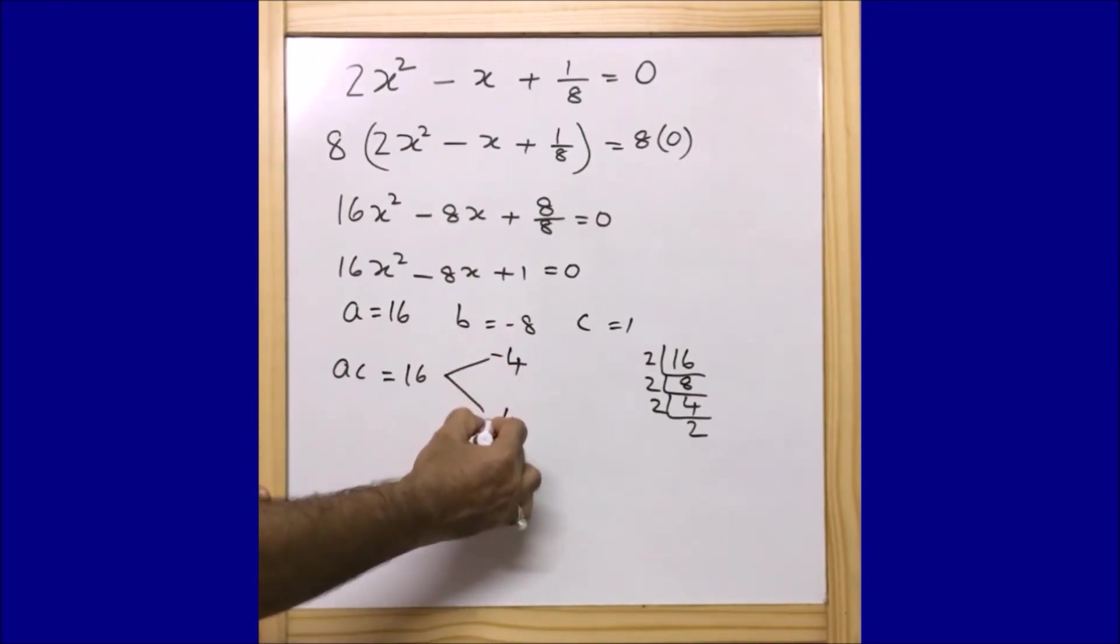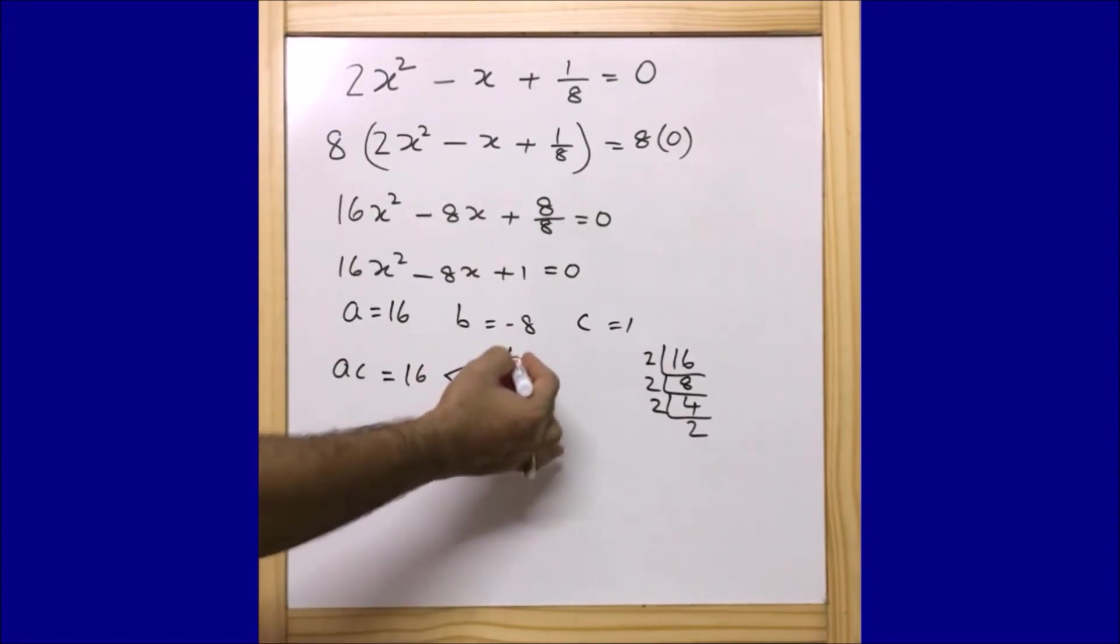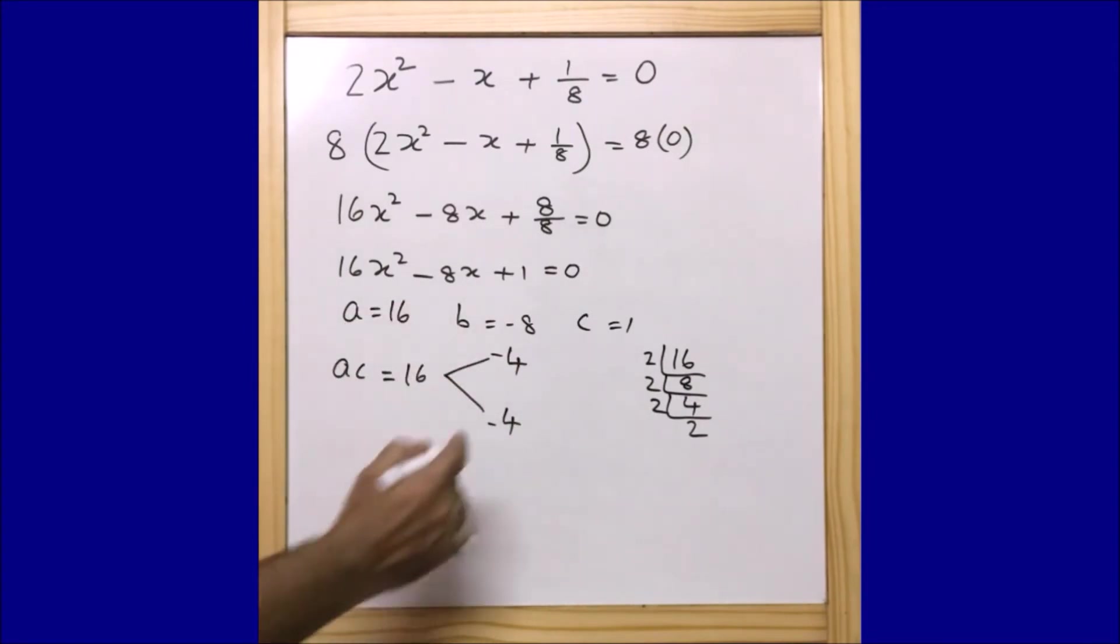That means if I take -4 and -4, if I add these two I am getting -8, and if I multiply -4 with -4 we are getting +16. These are the two numbers that we are looking for.